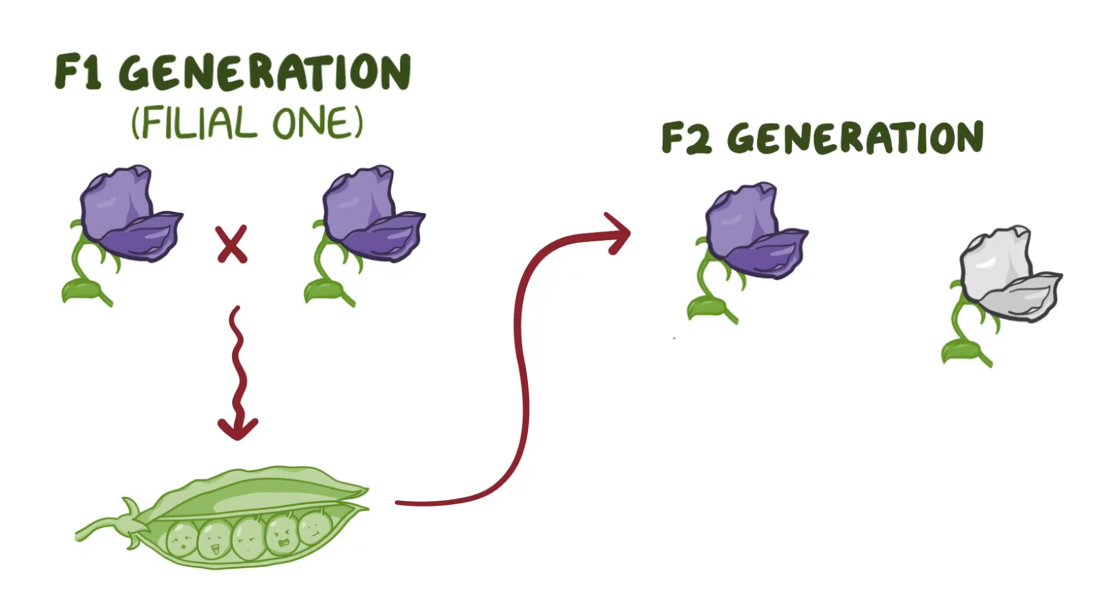It turned out that some of the plants in this F2 generation had white flowers, whereas other plants had purple flowers. In fact, the ratio was about 3 violet flowering plants for every one white flowering plant.